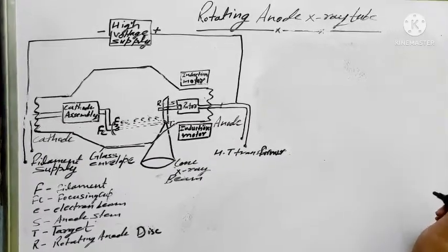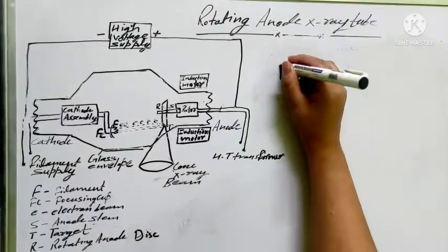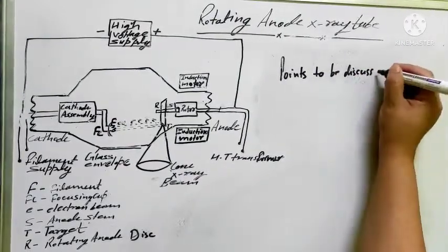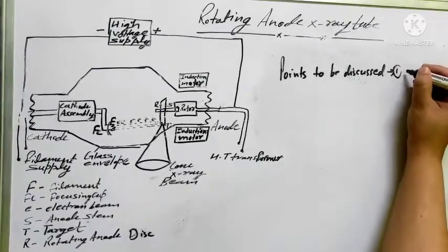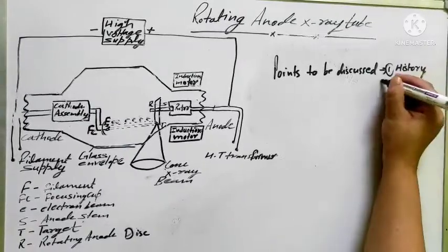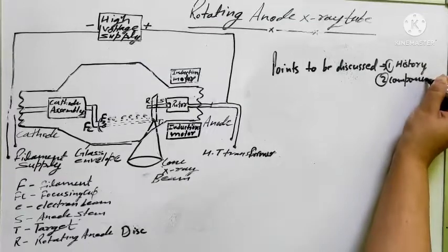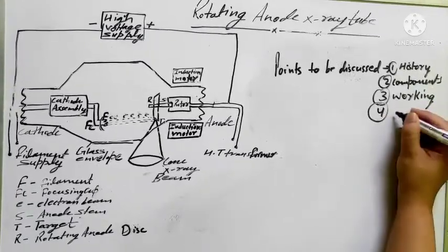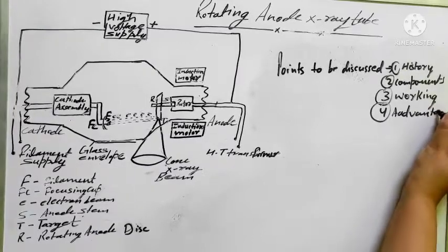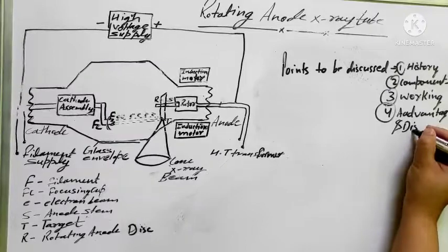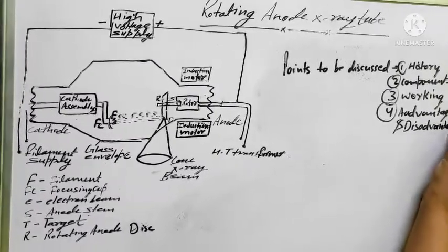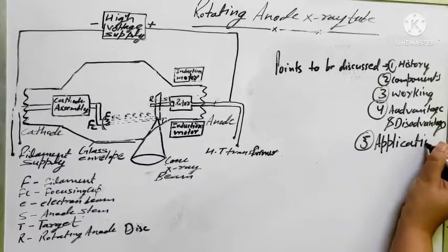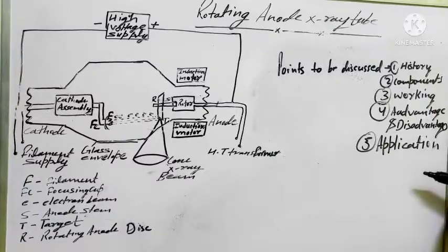I am going to discuss about the rotating anode X-ray tube. The points to be discussed in this lecture are: number one, history; number two, components; number three, working; number four, advantages and disadvantages; and the last one is applications. So this lecture we will discuss point by point, one by one.